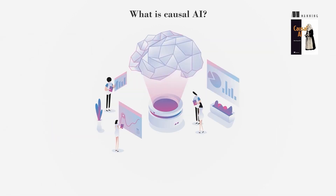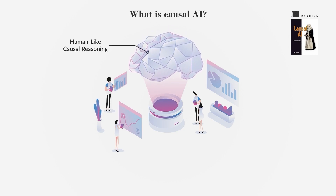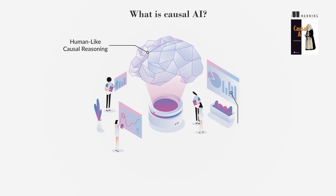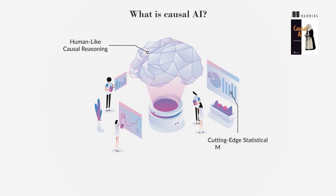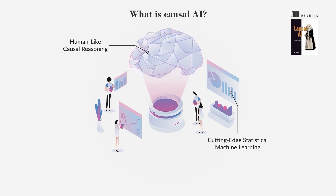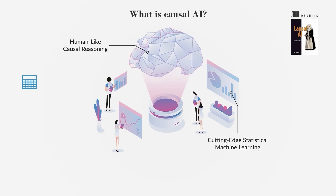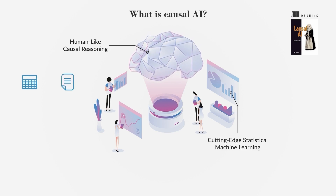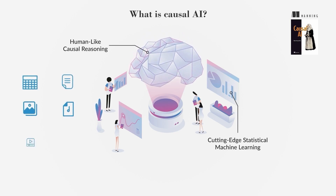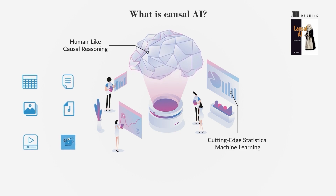Causal AI involves creating algorithms that emulate human-like causal reasoning while leveraging the predictive power of cutting-edge statistical machine learning. It tackles traditional causal inference problems with tabular data, as well as text, image, audio, video, and multimodal data typical of modern machine learning.